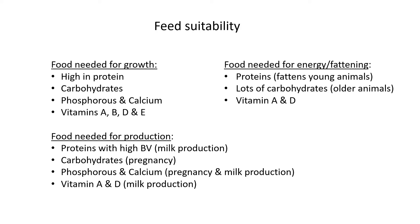Food needed for energy or fattening: protein is good mainly for young animals, where excess protein causes the body to convert it to fat. Lots of carbohydrates are very good for older animals for fattening. Vitamins A and D also help animals gain energy and become fat.